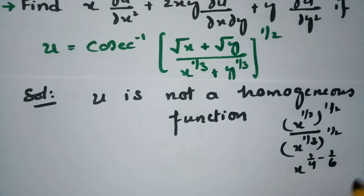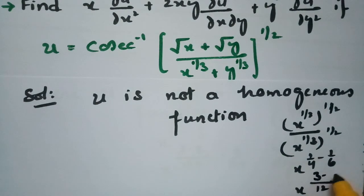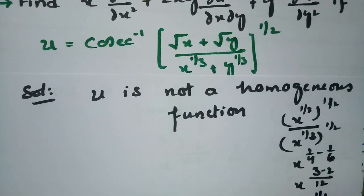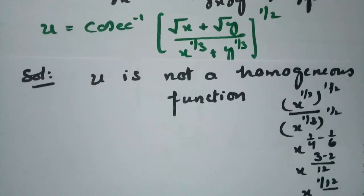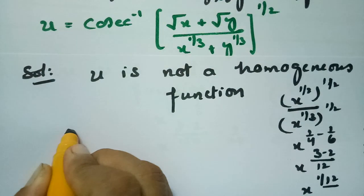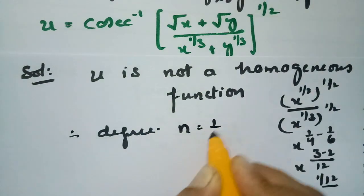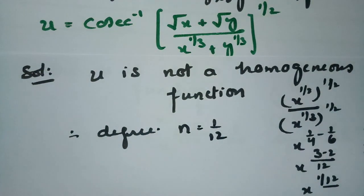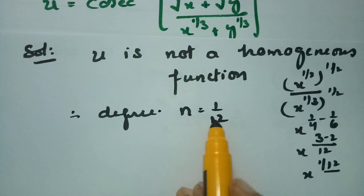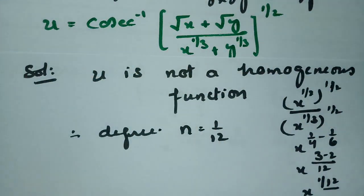When it comes to the numerator this is minus. For 1/4 and 1/6, the LCM is 12. So 3/12 minus 2/12 gives 1/12. Therefore the degree n = 1/12.